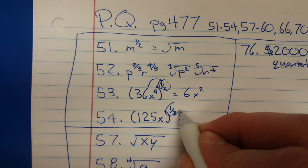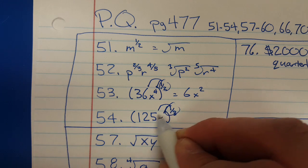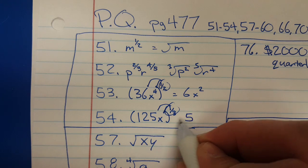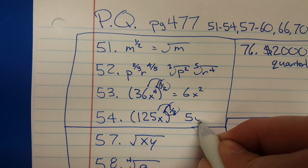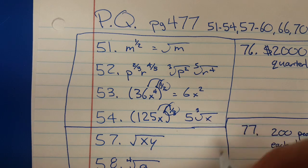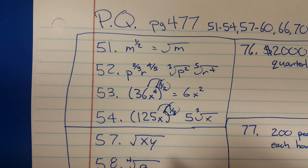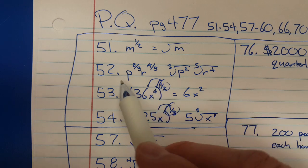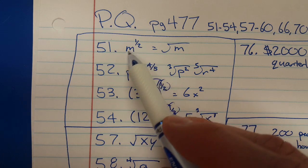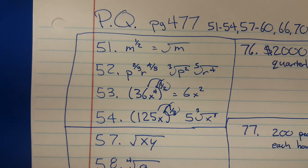One-third. So sprinkle in the one-third. 125 to the one-third is five, and then x to the one-third would be the third root of x. If I rewrote it as x to the one-third, the three would get kicked out and then the one would stay, but I really don't have to write the one. So those were going from exponential form to radical form.